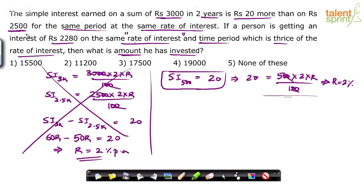In fact, you can do it even smarter — mentally. Simple interest on 500 rupees is 20 for two years. For one year it will be 10, since simple interest is equal every year. Now, 10 is what percentage of 500? It's 2%. So the rate of interest is 2%. There are multiple ways to find the rate of interest — use the easiest and least time-consuming method.